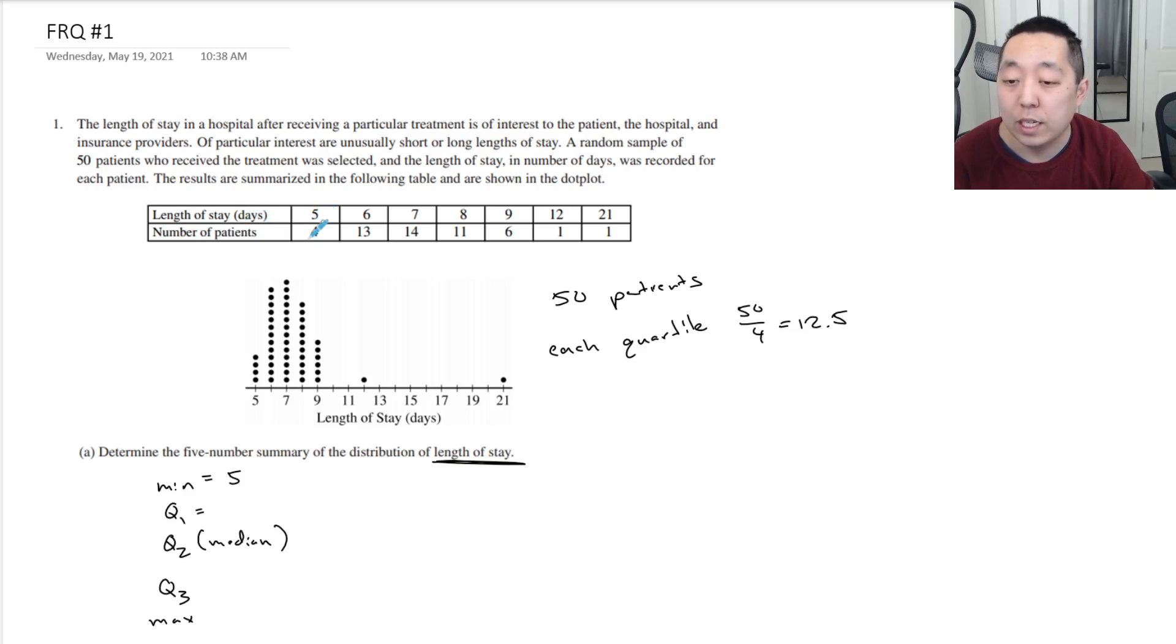So we need to count up to 12.5 people and see. So in terms of length of stay, there's four people here. We need to go up eight more people, or you can think of it counting it this way. One, two, three, four, five, six, seven, eight, nine, ten, eleven, twelve, and the 12.5 is going to be here, so that's going to be six days.